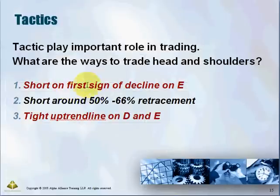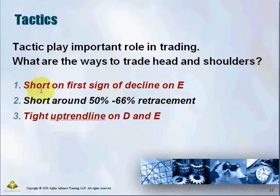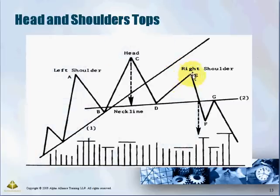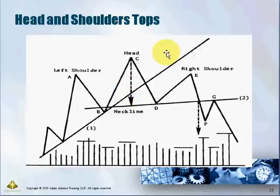There are a few ways to trade the head and shoulder top. First, you can short on the first sign of decline at point E — short around the 50 to 60 percent retracement level. You can also draw a tight uptrend line on D and E, and when it breaks that tight uptrend line you can start to go short. Before entering, you need to identify the head and shoulder pattern, or at least a suspected one, by looking at the breaking of the uptrend line and the volume.